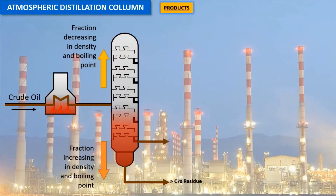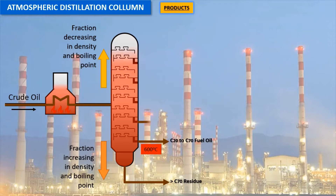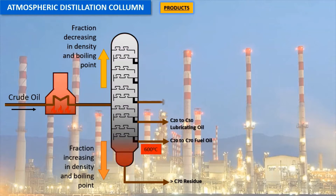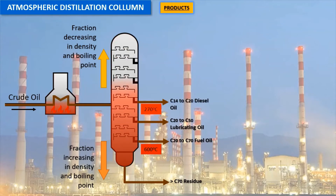Crude oil is made up of a mixture of hydrocarbons, and the distillation process aims to separate this crude oil into broad categories of its component hydrocarbons or fractions. Crude oil is first heated and then put into a distillation column, also known as a still, where different products boil off and are recovered at different temperatures.